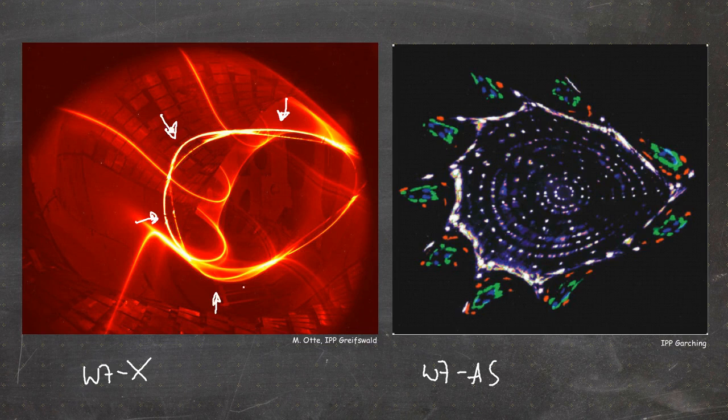On the right-hand side you can even see that within these island structures there are encapsulated flux surfaces as well. So these magnetic islands are basically nested flux surfaces encapsulated in the background configuration. Let's write down a few facts about magnetic islands.